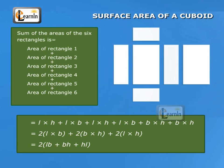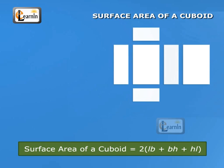This gives us the surface area of a cuboid, which is two into LB plus BH plus HL, where L, B, and H are respectively the three edges of the cuboid.